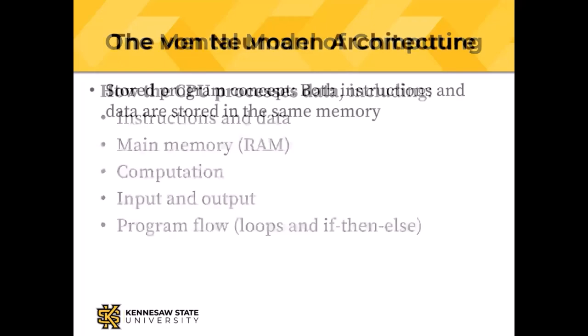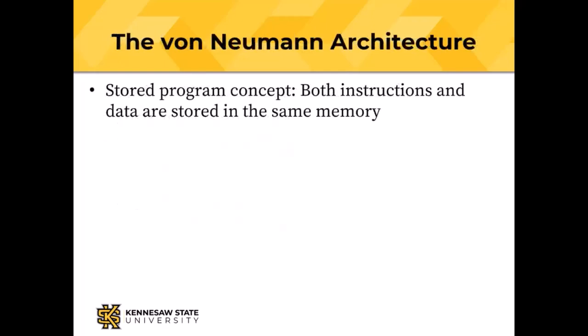The features of the von Neumann architecture include the stored program concept. Prior to von Neumann's first draft, computers were programmed by rewiring them — a tedious job that took hours.